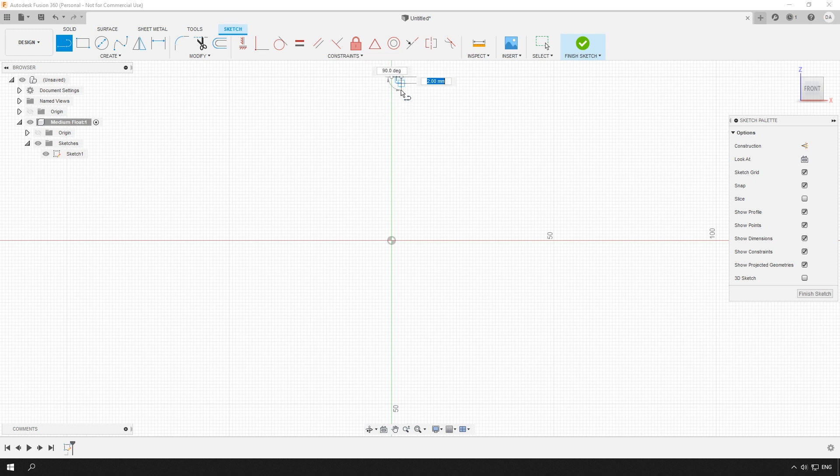First, I will design a 3D printable model of the future float. There are many 3D modeling programs and most of them will work for this task. I am using a program called Autodesk Fusion 360.